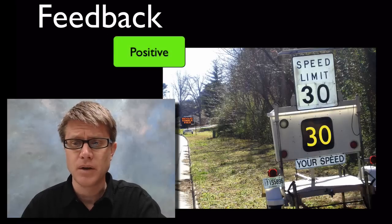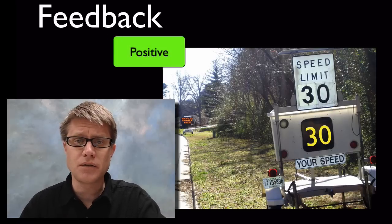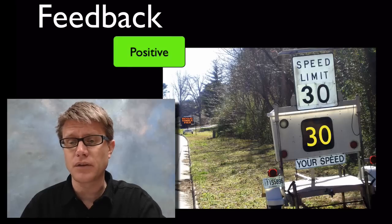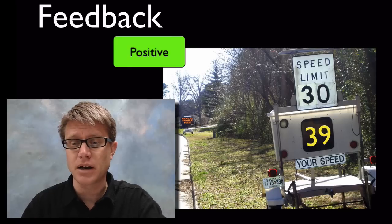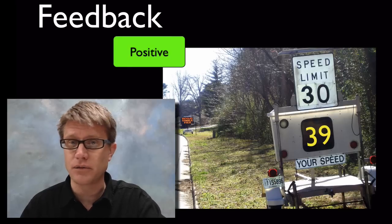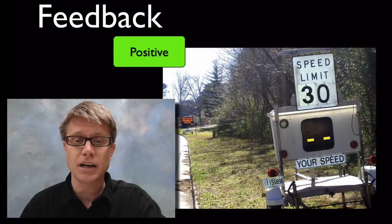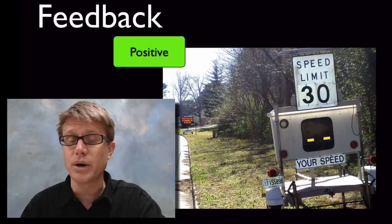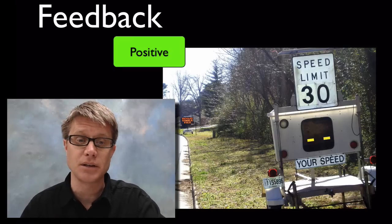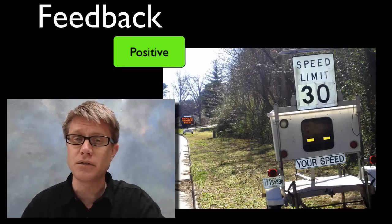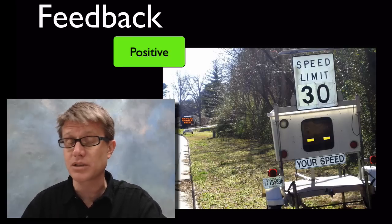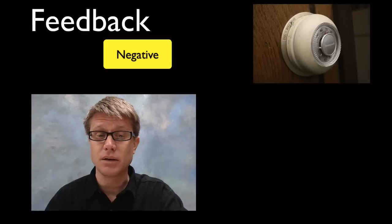Positive feedback loops are different. In a positive feedback loop you move away from the set point as quickly as possible. So if I see 30 miles an hour, I'm like, I can go faster — 39, 51, 72 — pegging it out and moving way away from that speed limit. That's a positive feedback loop: if we want to move away from a set point, we use positive feedback.